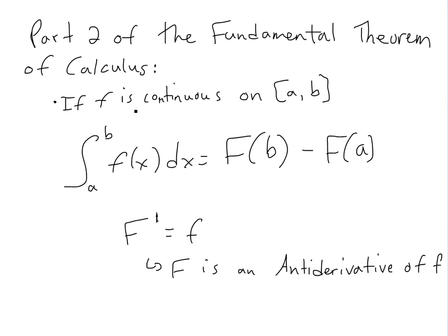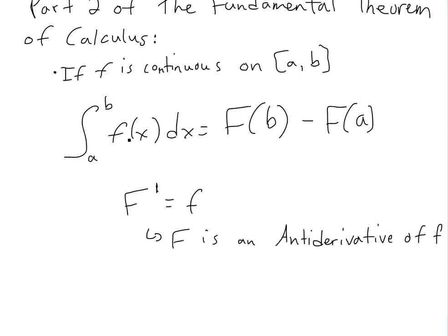Basically, if the function f is continuous on the closed interval a and b — this closed just means that at a and b, f is defined, so it needs to have a value; you'll see a video link below on that as well — basically then you get this integral here: the integral from a to b of f of x dx equals capital F of b minus F of a, where capital F is an anti-derivative of f.